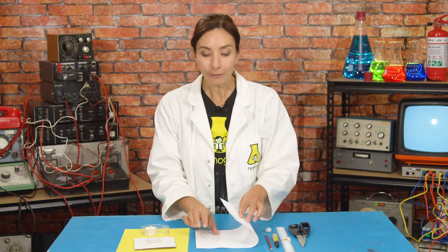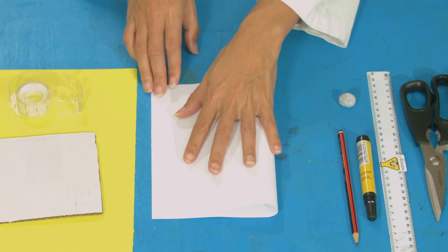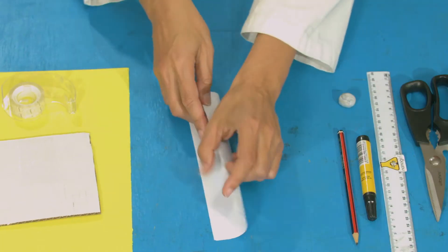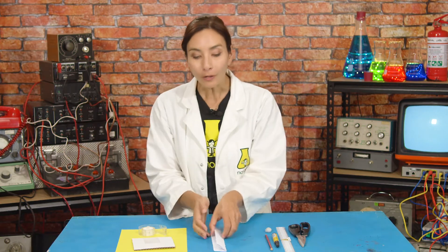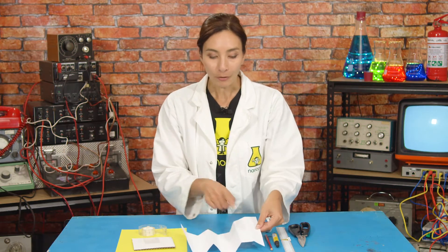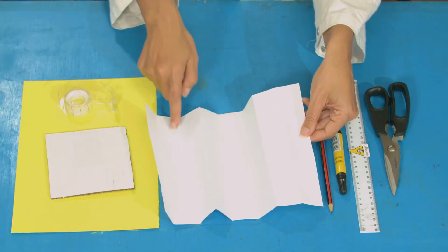We're going to start by making our animation strip. So take your A4 piece of paper and fold it in half this way three times. One, two, three. When you unfold it you should have eight columns that are marked by creases. One, two, three, four, five, six, seven, eight.